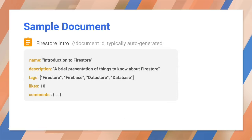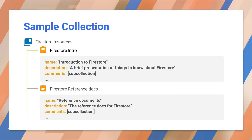A document can consist of many key-value pairs, with available types including arrays, booleans, bytes, dates and times, floating point numbers, geographical points, integers, maps, nulls, references, and text strings. A collection is a grouping of documents, and a document can have sub-collections.